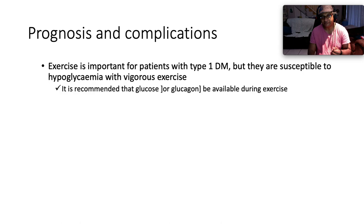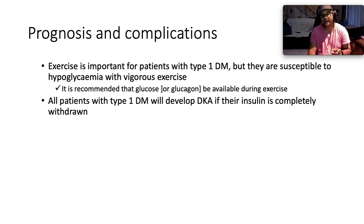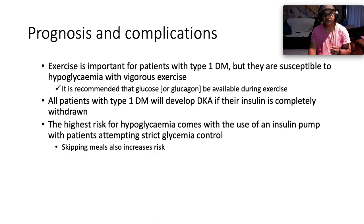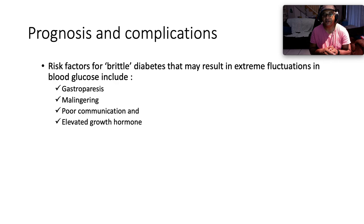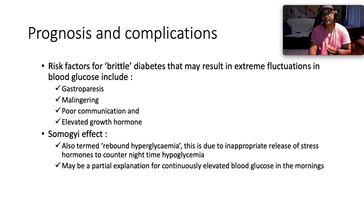Regarding prognosis and complications: exercise is important for patients with type 1 diabetes, but they are susceptible to hypoglycemia with vigorous exercise — glucose or glucagon should be available. All patients with type 1 diabetes will inevitably develop diabetic ketoacidosis if insulin is completely withdrawn. The highest risk for hypoglycemia comes with use of an insulin pump combined with very strict glycemic control; skipping meals also increases risk. Risk factors for brittle diabetes — extreme fluctuations in blood glucose — include gastroparesis, malingering, poor patient communication, and elevated growth hormone. The Somogyi effect, also termed rebound hypoglycemia, is due to inappropriate release of stress hormones countering nighttime hypoglycemia and partially explains continuously elevated blood glucose in the mornings.